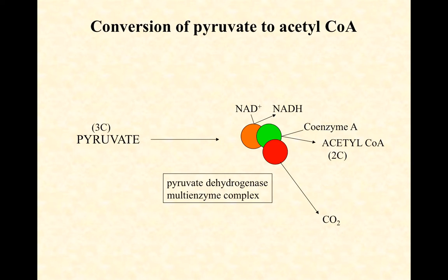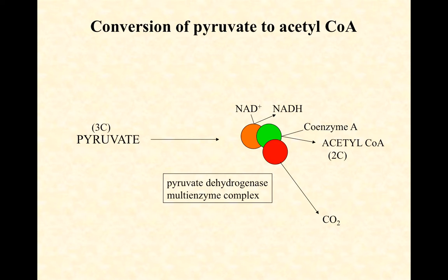Pyruvate is produced from glycolysis, but acetyl-CoA is what we need. So pyruvate is going to next be processed by a multi-enzyme complex. This is a common theme in biochemistry, where multiple enzymes that catalyze sequential steps in a reaction are aggregated together for efficiency. One of the three enzymes in this complex is called pyruvate dehydrogenase, and so the whole complex is named after that one — the pyruvate dehydrogenase multi-enzyme complex.